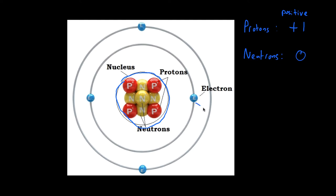Circling outside the nucleus are smaller things called electrons. Electrons have a minus-one charge, meaning they are negatively charged. Importantly, the only thing that moves from one substance to another are electrons. Protons and neutrons moving relates to radioactivity, not electricity. Electricity is the movement of electrons. If something gains electrons it becomes more negative; if it loses electrons it becomes more positive. The nucleus stays where it is.